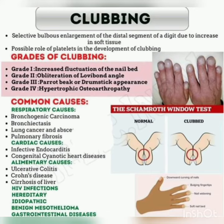The common causes of clubbing are: respiratory causes including bronchogenic carcinoma, bronchiectasis, lung abscess, and pulmonary fibrosis; cardiac causes including infective endocarditis and congenital cyanotic heart disease; alimentary causes including ulcerative colitis, Crohn's disease, and cirrhosis of the liver; and also HIV infections, hereditary idiopathic causes, benign mesothelioma, and other gastrointestinal diseases.